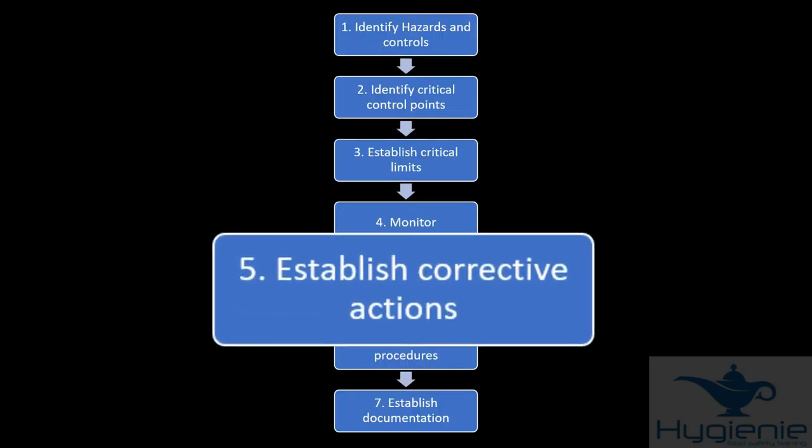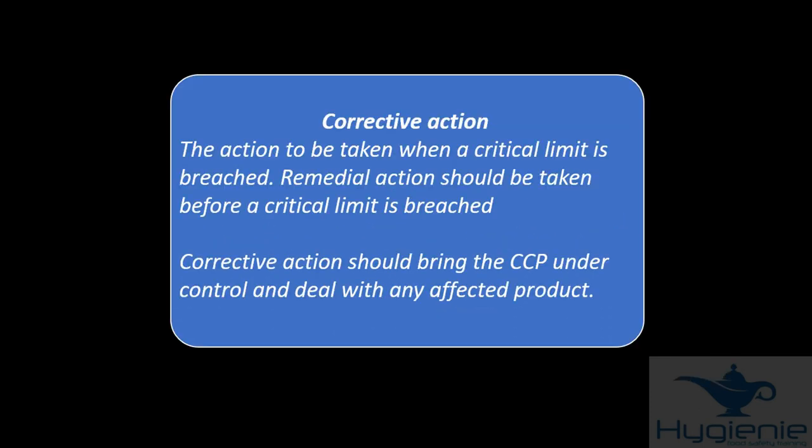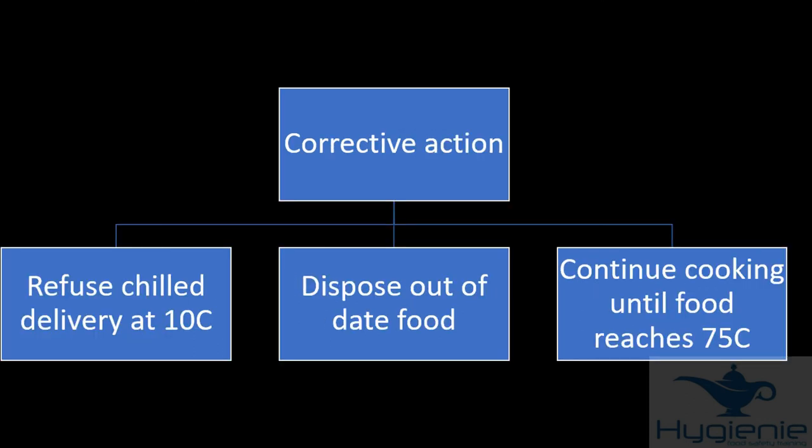Principle five, establish corrective actions. Corrective action is the action you take when a critical limit is breached. Remedial action should be taken before the critical limit is breached. Corrective action should bring the CCP back under control and also deal with the affected product. In other words, it's what we do when things go wrong to ensure the CCP is under control and we deal with the product. Examples include refusing a delivery at 10 degrees or anything above 8, disposing of out-of-date food and continuing cooking until food reaches 75 degrees.